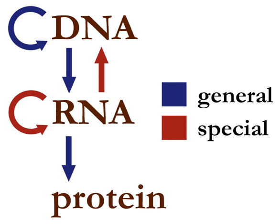The central dogma of molecular biology is an explanation of the flow of genetic information within a biological system. It is often stated as 'DNA makes RNA and RNA makes protein,' although this is not its original meaning.